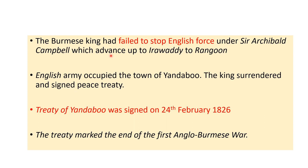Meanwhile, another English force under Sir Archibald Campbell advanced up the Irrawaddy to Rangoon, the capital of Burma. The Burmese king completely failed to stop the advancing English force in their own country. The English army occupied the town of Yandabu in Burma, the king surrendered and signed a peace treaty known as the Treaty of Yandabu on 24th February 1826, marking the end of the First Anglo-Burmese War.